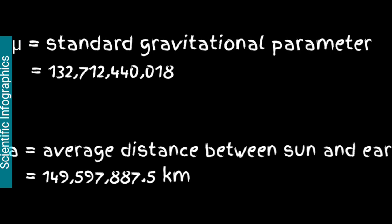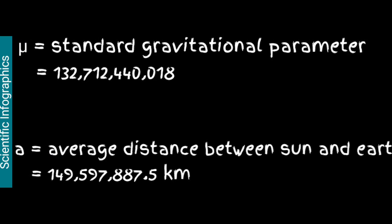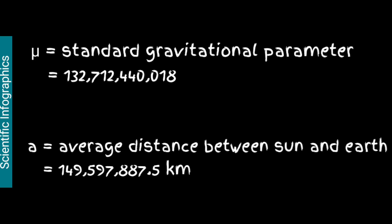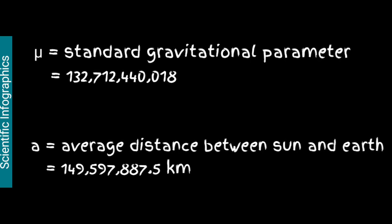Here, μ stands for the standard gravitational parameter, and a stands for the average distance between the Sun and Earth.